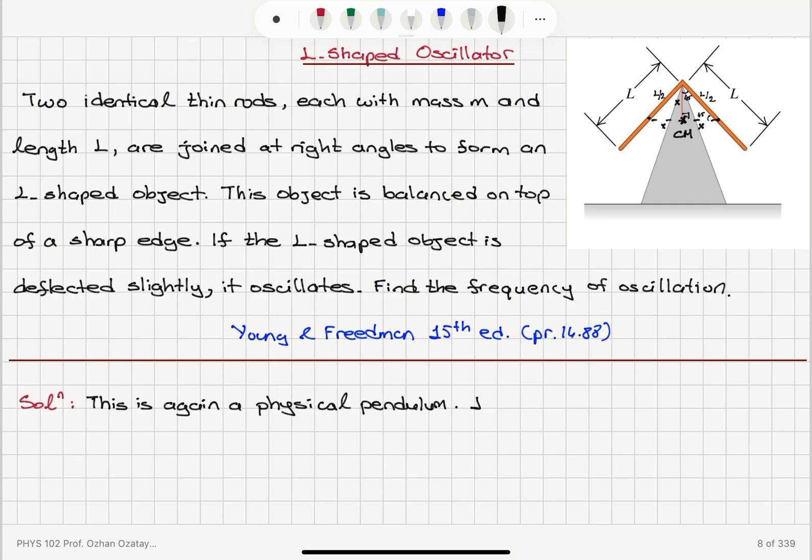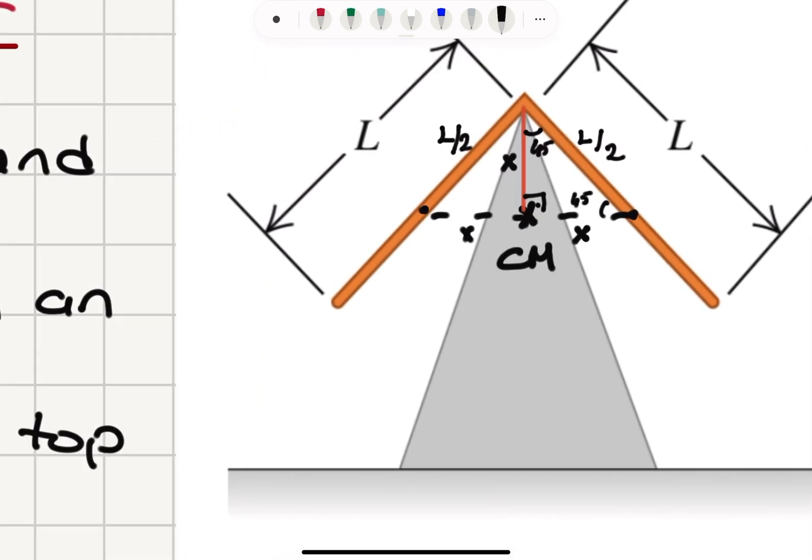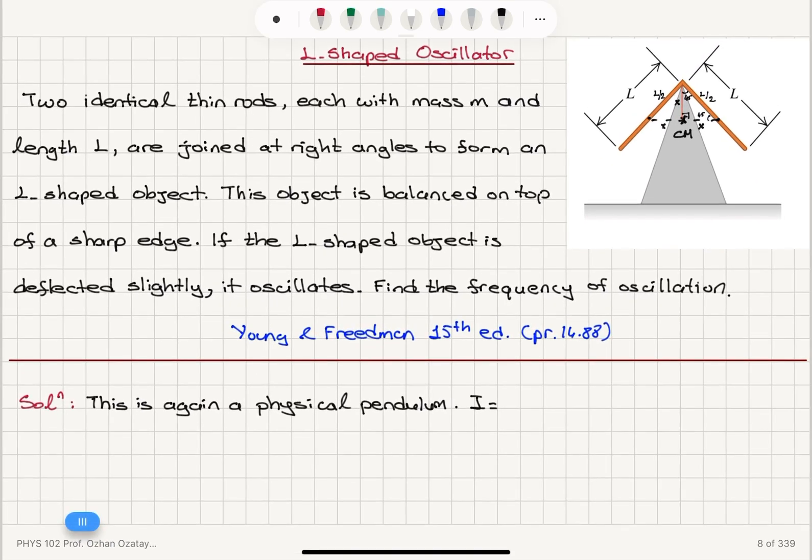The moment of inertia for center of mass axis rotations was ML squared over 12, but for rotations about one end, using the parallel axis theorem, we have ML squared over 12 plus ML squared over 4, which gives us ML squared over 3.